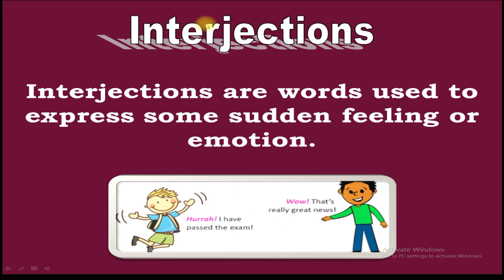The next part of speech is interjections. Now what are interjections? Interjections are words used to express some certain feeling or emotion. Like sometimes you express your feelings: 'Hooray! I have passed the exam.' 'Wow! That's really great news.' These are the examples of interjections.